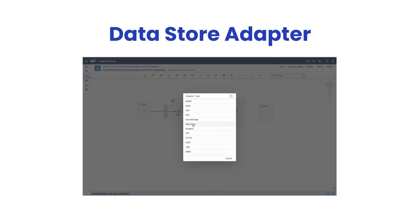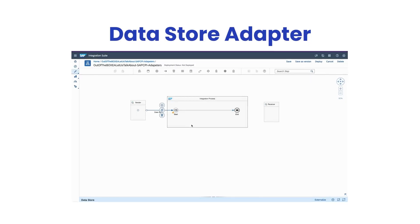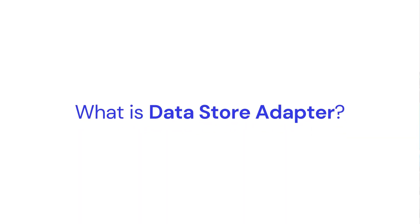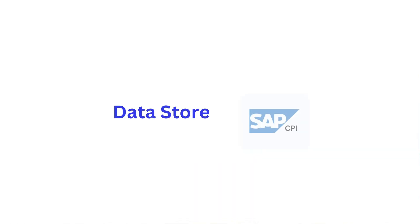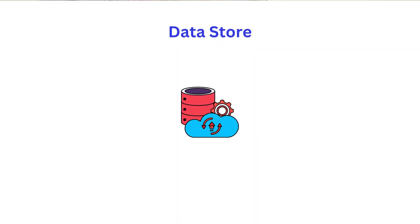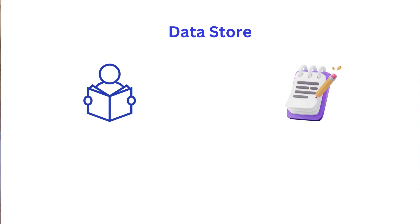Welcome to another video. In this video I'm going to talk about the data store adapter in SAP CPI. Before I begin, I want to explain what a data store is in SAP CPI. In SAP CPI we have something called a data store, which is a temporary data store in the SAP CPI tenant. We can use this data store to read and write messages from different integration flows.